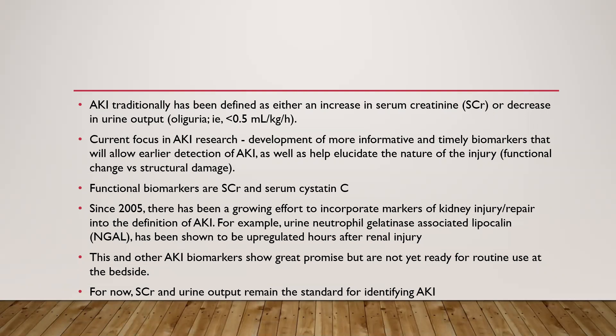AKI has traditionally been defined as either an increase in creatinine or a decrease in urine output. Currently, the focus is on biomarkers, because creatinine takes a lot of time to rise even well before the injury might have started, so early detection is the goal. Biomarkers can be functional, like creatinine and cystatin C, or structural, which help assess structural damage. As of now, serum creatinine and urine output are the main tools used to identify and classify AKI.